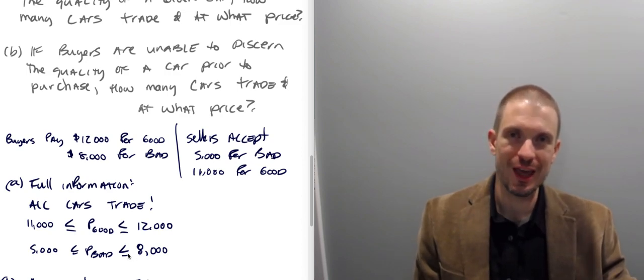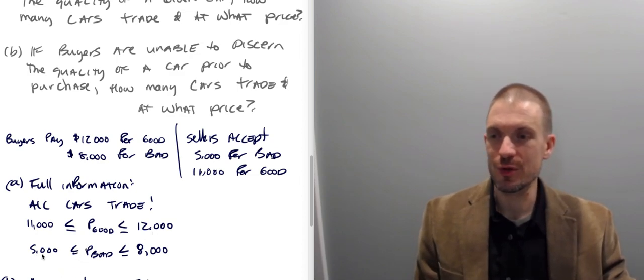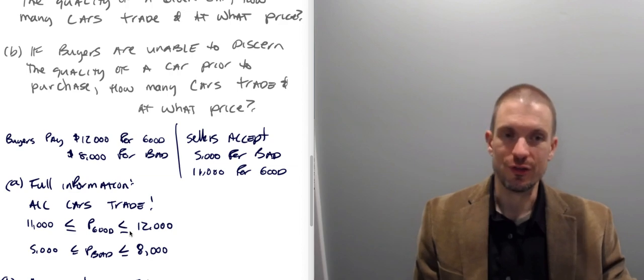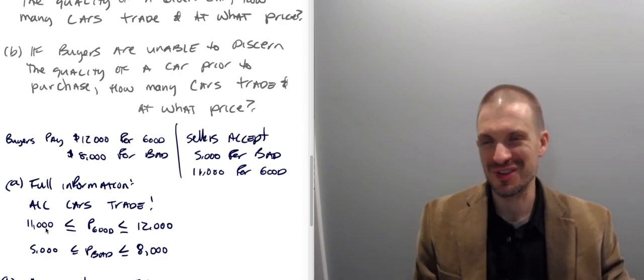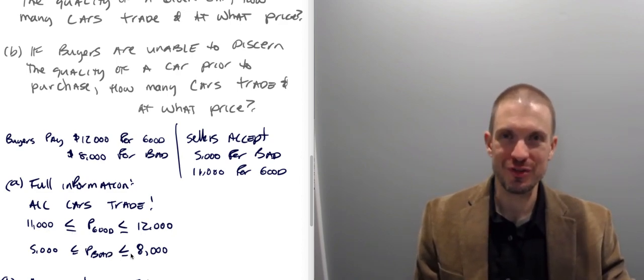What will be the price? Well, we can't say exactly, but we can say the price has to lie of a good car somewhere in the interval between $11,000 and $12,000. And the price of a bad car is going to lie somewhere in the interval between $5,000 and $8,000. So if buyers have more bargaining power, the price will be closer to the seller's willingness to accept. If sellers have more bargaining power, the price will be closer to the buyer's willingness to pay.